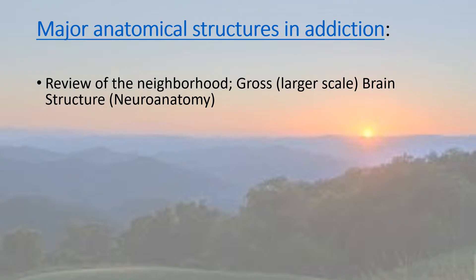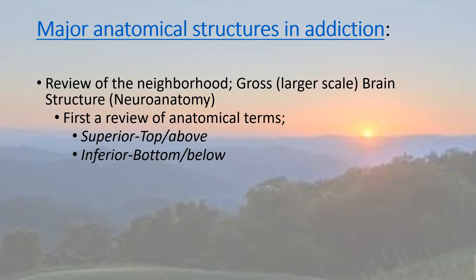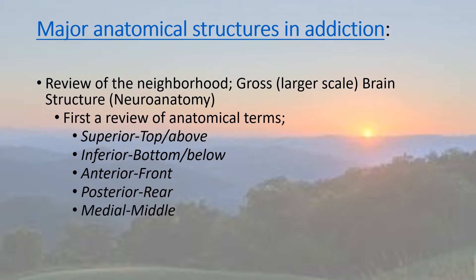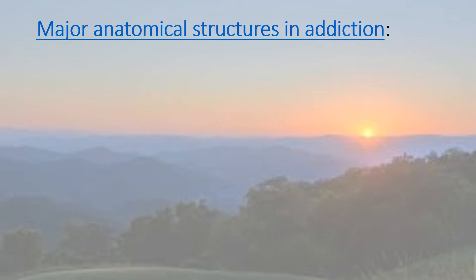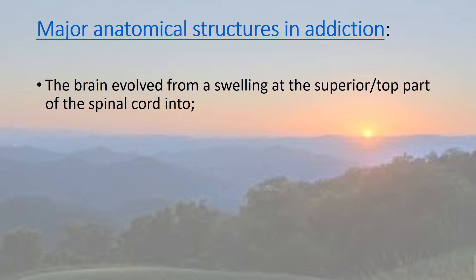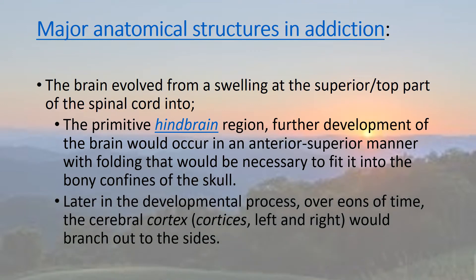Just to give you a review of the neighborhood on the gross or large scale of the brain structure, which by definition is neuroanatomy. The review of the anatomical terms we're talking about: superior means toward the top or above; inferior, toward the bottom or below; anterior would be to the front; posterior would be toward the rear; medial is middle; and lateral to the sides. Right, left, or bilateral would be both sides. The brain evolved from a swelling at the superior top part of the spinal cord into the primitive hindbrain region. With further development, the brain would occur in the anterior superior manner described earlier. Folding would become necessary to fit it within the bony confines of the skull. Later in the developmental process, evolutionary over eons of time, the cerebral cortices left and right would branch out to the sides.